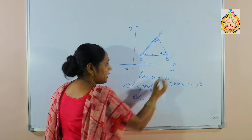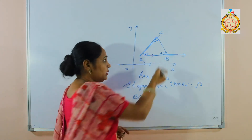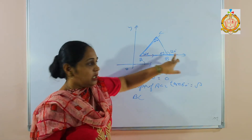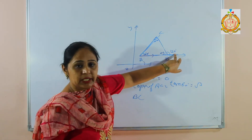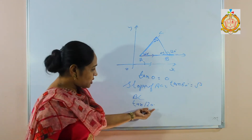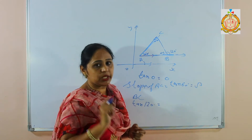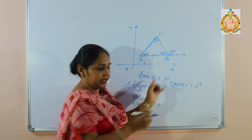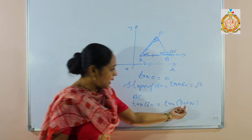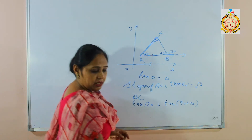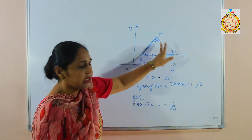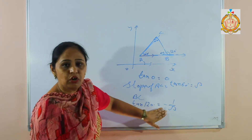For line BC, we look at the positive and negative sides of the x-axis. The angle inside is 60 degrees, but we must take the angle with the positive x-axis. Since it is a linear pair, the angle on the outside becomes 120 degrees. So the slope is tan 120. Since 120 equals 90 plus 30 and we are on the negative side, we can take the negative value of the corresponding angle. If the angle is on the negative side, take the negative of that value.